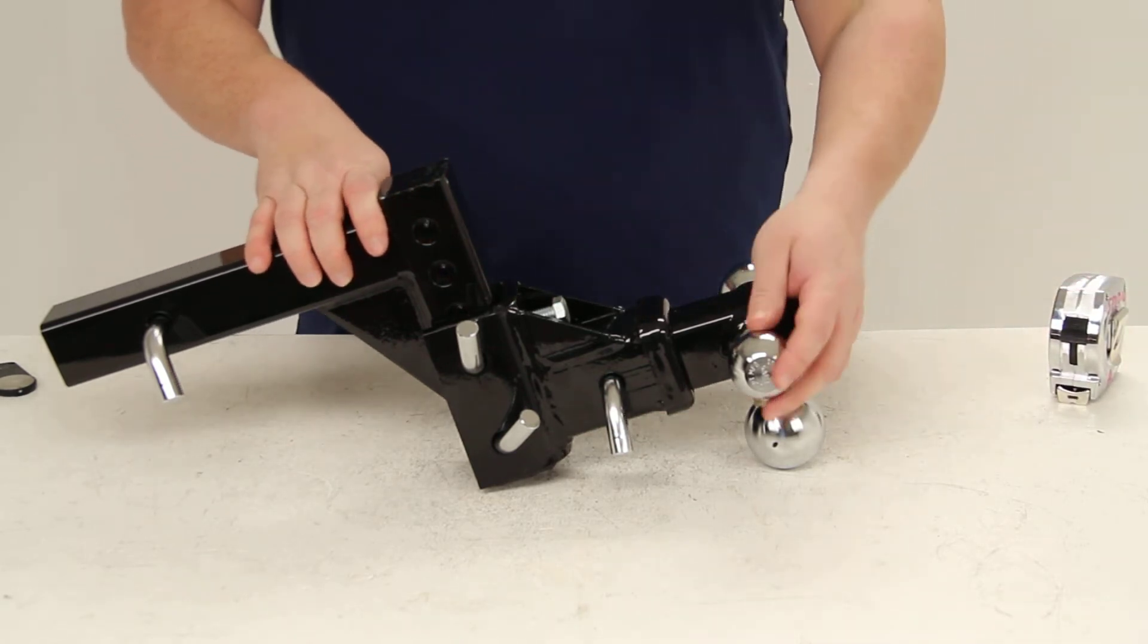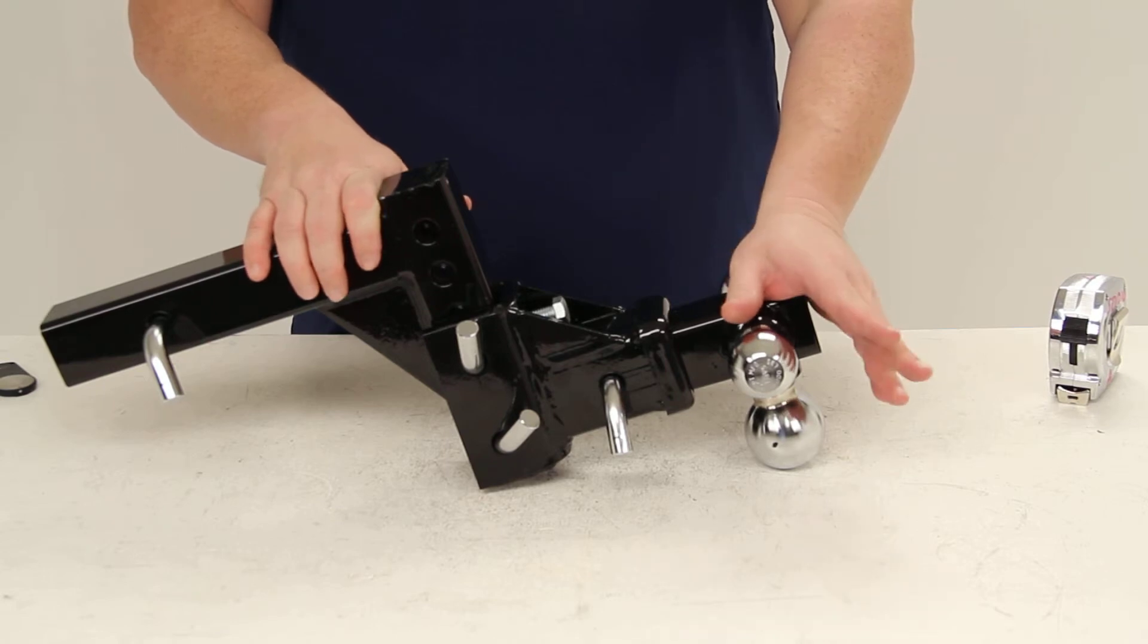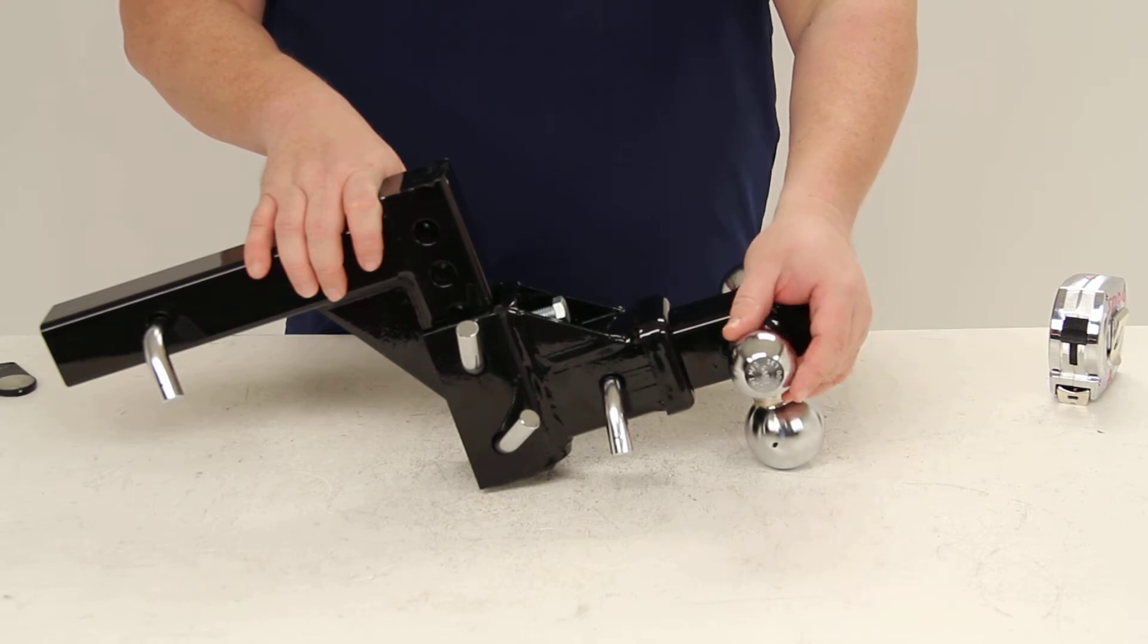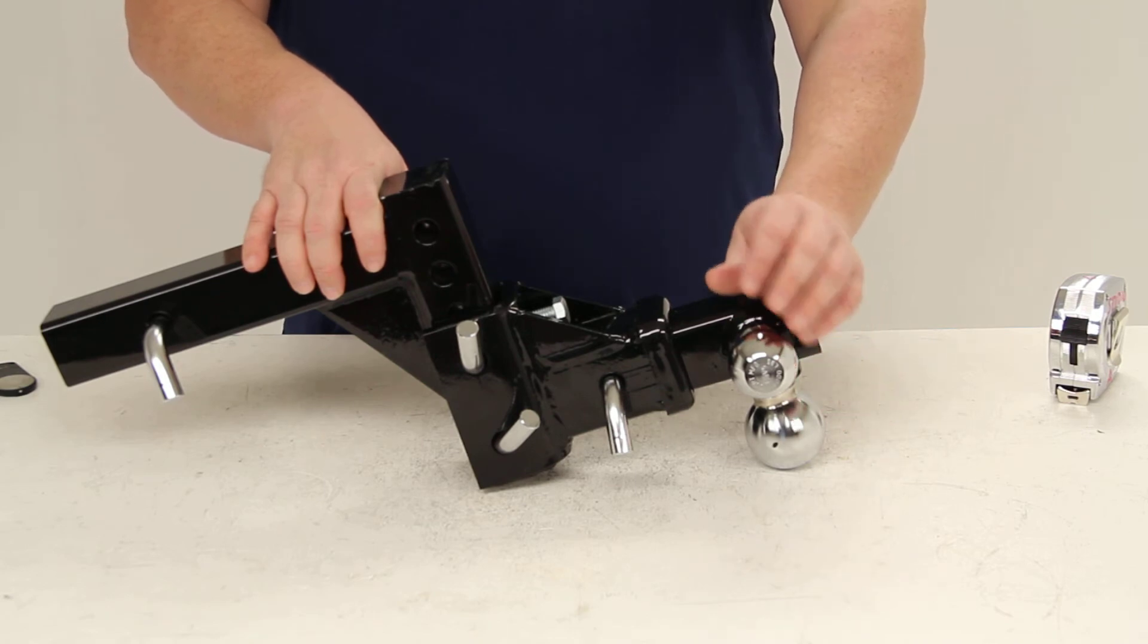Weight capacities for each of the balls: the one and seven-eighths inch has a capacity of 6,000 pounds, the two-inch ball has a weight capacity of 7,500 pounds, and the two and five-sixteenth inch ball has a weight capacity of 10,000 pounds.